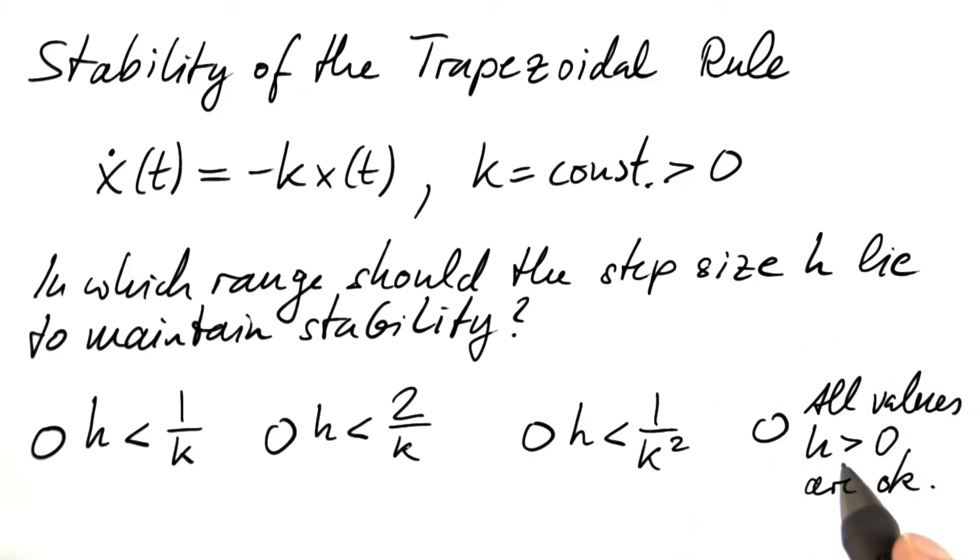It turns out that all positive values for the time step are okay, no matter how high. This is similar to the backward Euler method. And now we're going to look into why that is the case.